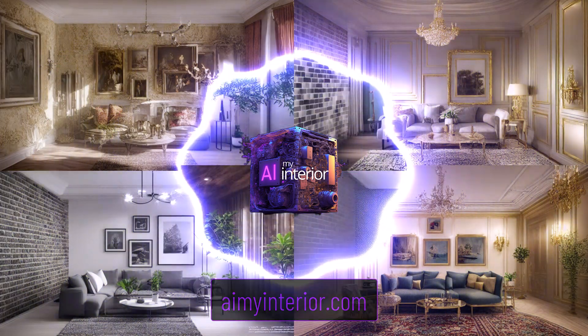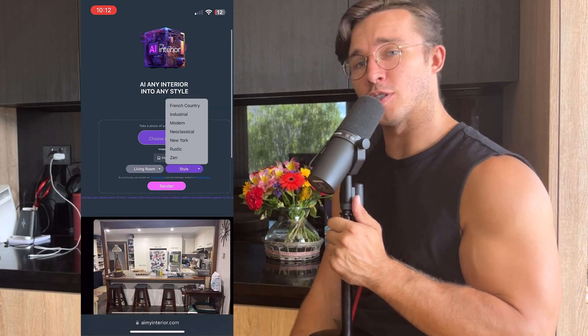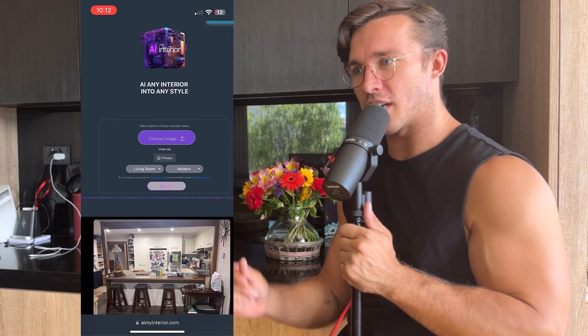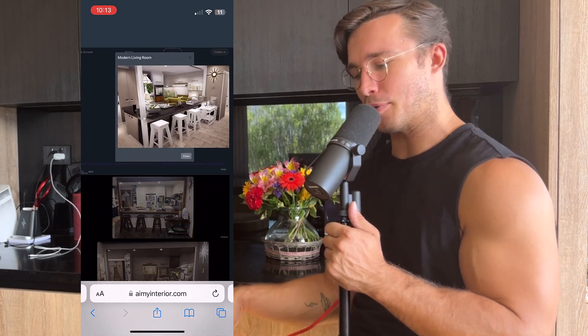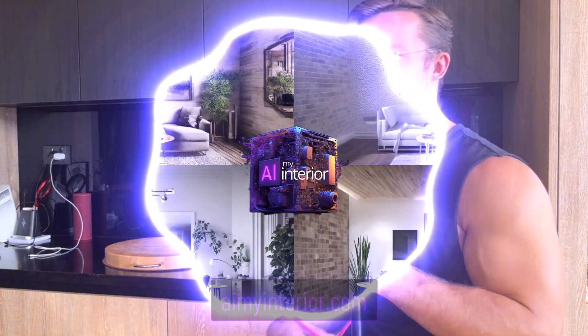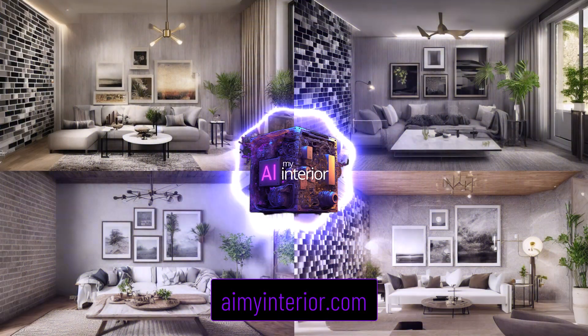If you want a new interior design of any room in your house, you just take a picture, upload it into my site, aimyinterior.com, and it'll spit it out with a new style. You choose what style you want, industrial, rustic. Also doing this with cars, if you want to turn your car into a muscle car, supercar. That'll be out very shortly as well.